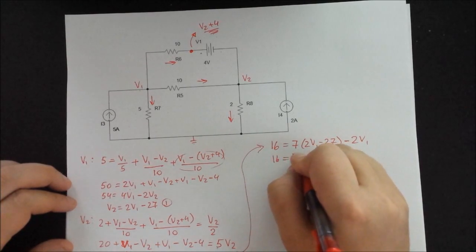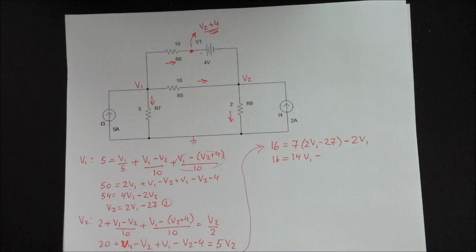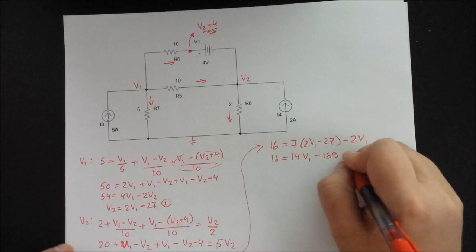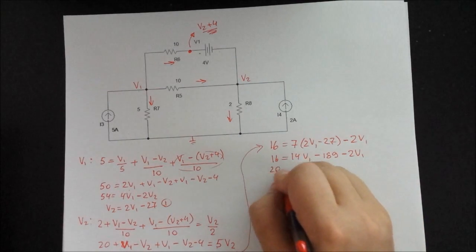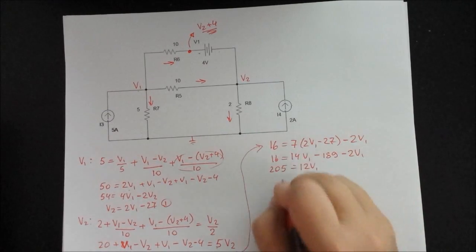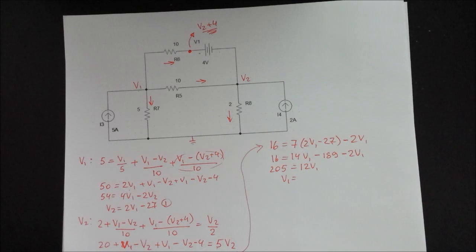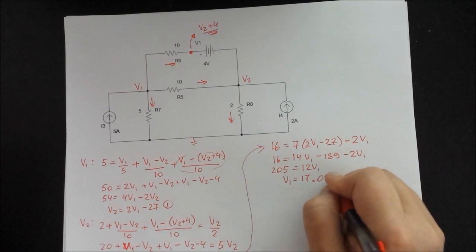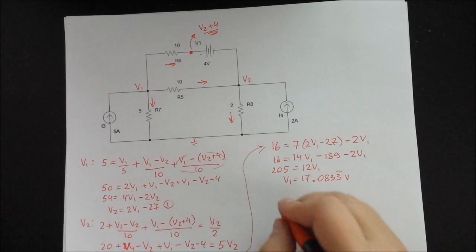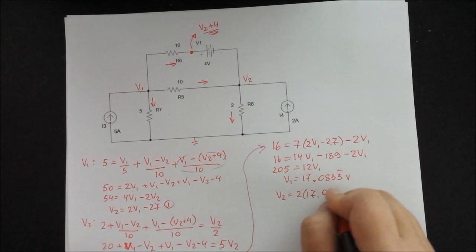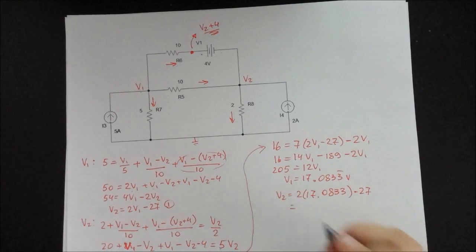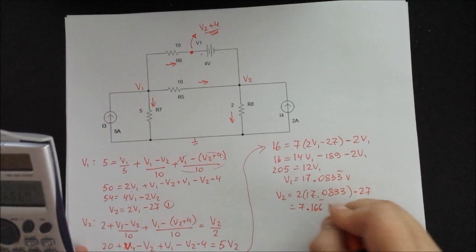16 is equal to 14V1 minus 189. Minus 2V1. So that gives us 205 is equal to 12V1. So V1 is equal to 17.0833. And obviously you can substitute V1 back into V2. So V2 is equal to 2 times 17.0833 minus 27. So that gives us 7.166V.